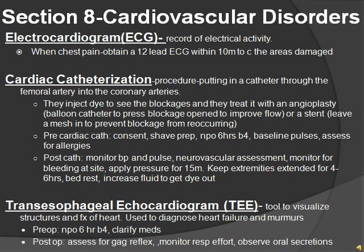Before the cardiac cath, you want to get consent, do a shave prep, NPO six hours before, obtain baseline pulses — especially the distal ones — and assess for allergies, especially because of the dye. After the cardiac cath, monitor blood pressure and pulse, do a neurovascular assessment, monitor for bleeding at the site, apply pressure for 15 minutes, keep the extremities extended for four to six hours, the patient will be on bed rest.